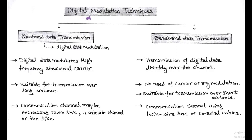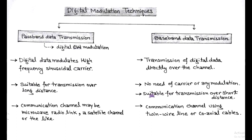Welcome once again, friends. In this session, we are going to discuss Digital Modulation Techniques. In the last video lectures, we talked about Baseband Data Transmission. In this method, digital data is transmitted directly over a low-pass type channel. In baseband data transmission, there is no need for a carrier or any modulation technique. Such baseband transmission is suitable only for short distances using low-pass type channels such as twin wireline or coaxial cables.